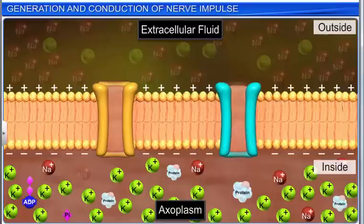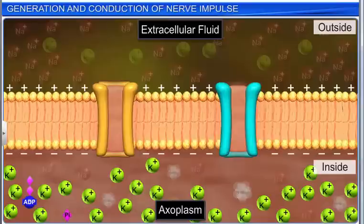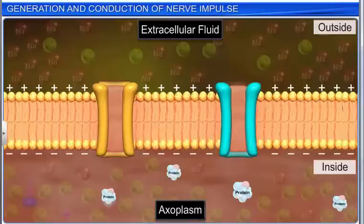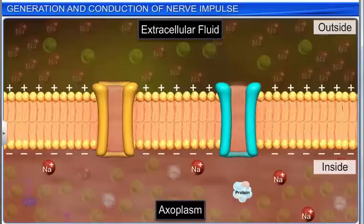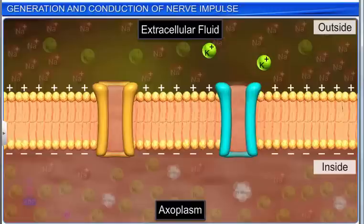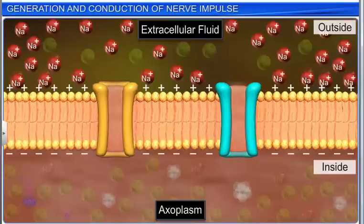Therefore, the axoplasm inside the axon contains a high concentration of potassium ions, negatively charged proteins, and a low concentration of sodium ions. On the contrary, the extracellular fluid outside the axon contains a low concentration of potassium and a high concentration of sodium.